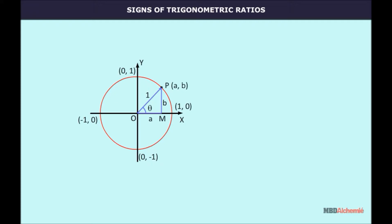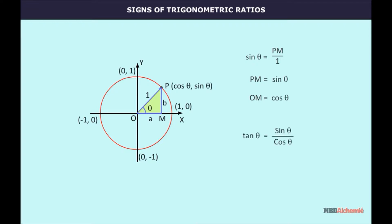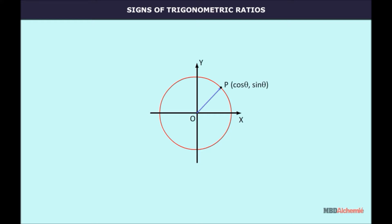In the first quadrant, triangle OPM is a right triangle and angle MOP is theta. Then sine theta equals PM upon 1, which implies PM equals sine theta. Similarly, OM is cos theta. The coordinates of P are (cos theta, sine theta). Here, sine theta and cos theta are both positive, and since tan theta equals sine theta upon cos theta, tan theta is also positive. Thus, in the first quadrant, all trigonometric ratios are greater than zero.